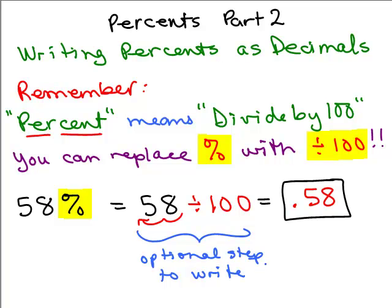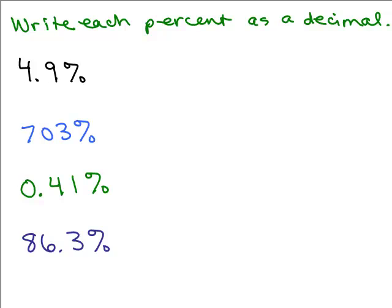We're going to do some more complicated problems now. When it's a two-digit number like 58 or 32, they're all going to be the same. But we're going to work with some problems that might have some fractions in it, might have some other decimals in it. Here's four problems, we want to write each of those that are in percent form as decimals. Put the video on pause and try these four problems first on your own.